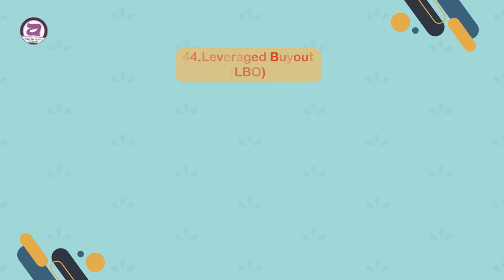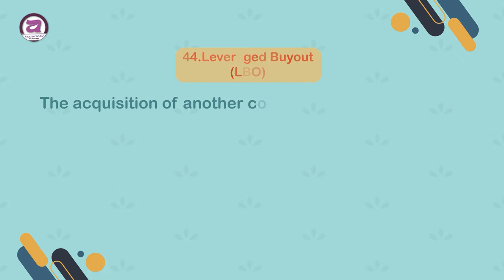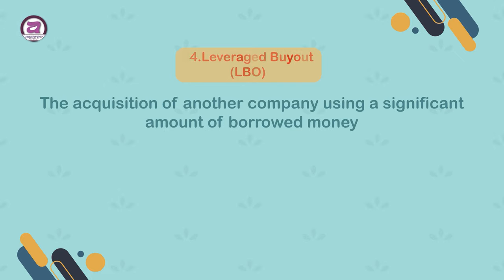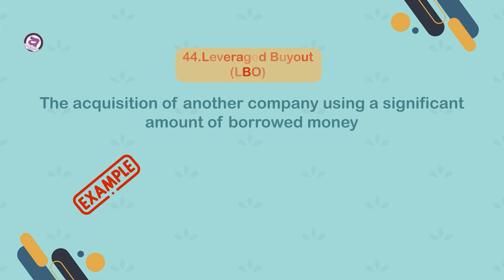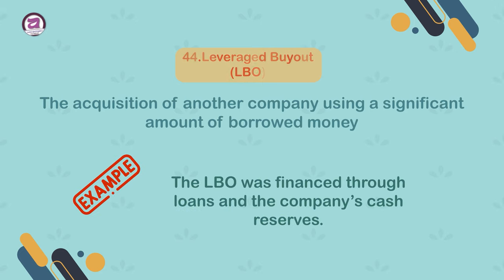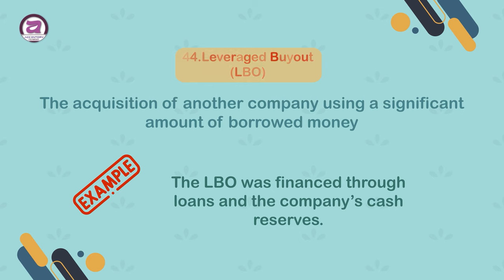44. Leveraged buyout (LBO). The acquisition of another company using a significant amount of borrowed money. Example: the LBO was financed through loans and the company's cash reserves.